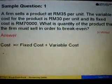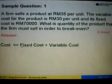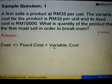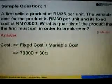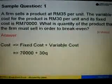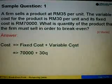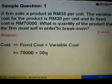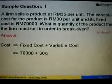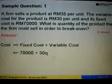To answer this question, let's start off with the cost function, which is equal to fixed cost plus variable cost. Fixed cost is given as RM70,000 plus the variable cost, which is P times Q, where P represents the cost price per unit, which is 30. So we have 30 times Q.